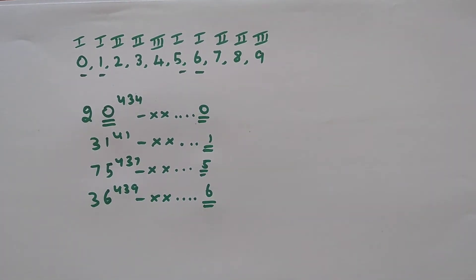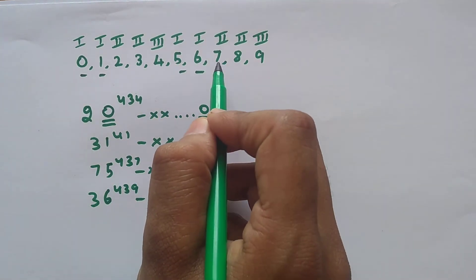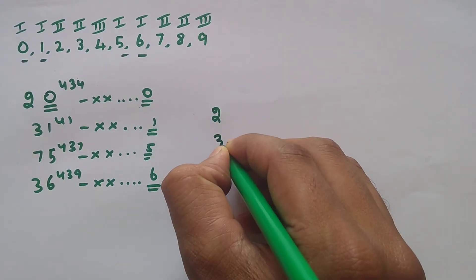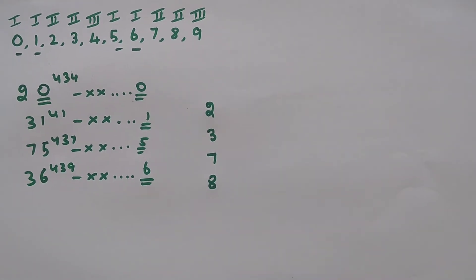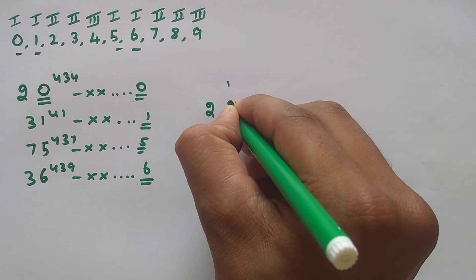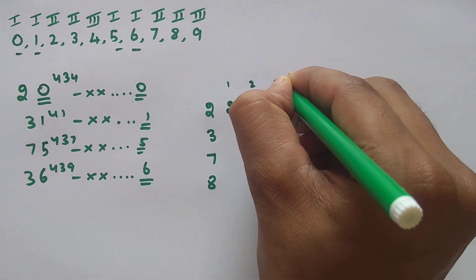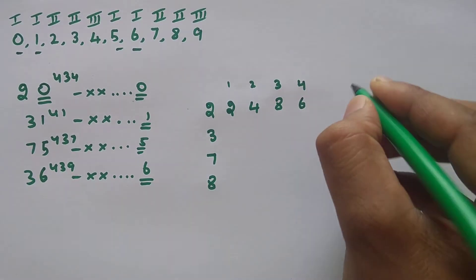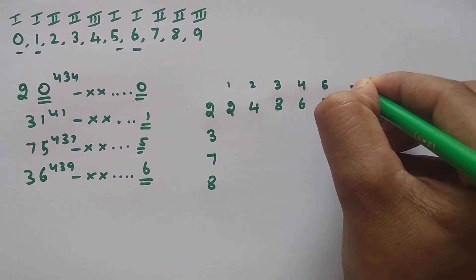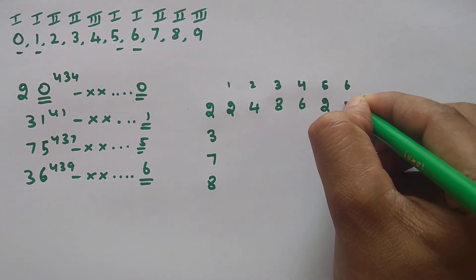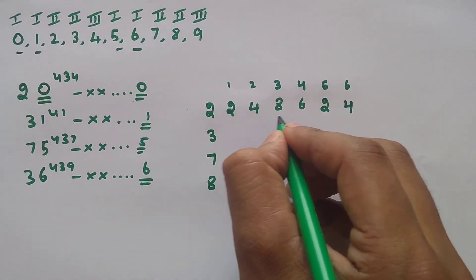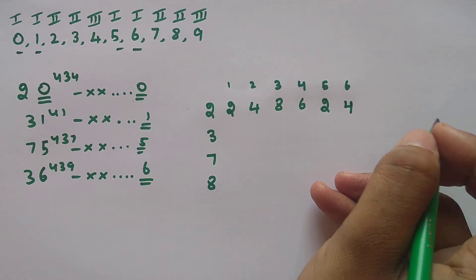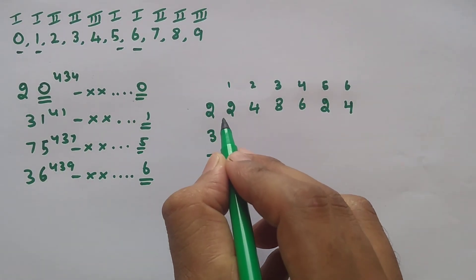Moving to the second category: numbers 2, 3, 7, and 8. For 2 power 1, the last digit is 2; 2 squared is 4; 2 cubed is 8; 2 power 4 is 16, so last digit is 6; 2 power 5 is 32, last digit 2; 2 power 6 is 64, last digit 4. If you observe closely, the series repeats every 4 times: 2, 4, 8, 6 — 2, 4, 8, 6. So the cyclicity of the number 2 is 4.